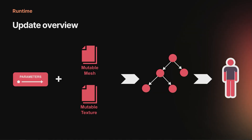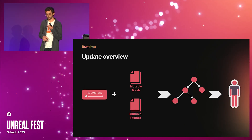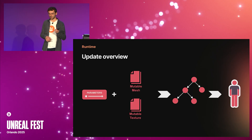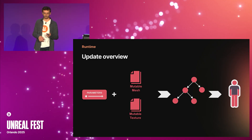Once a customizable object is compiled, Mutable can perform runtime updates on it. A runtime update takes the user parameters, compiles Mutable meshes and textures, and operates on them. Once the update finishes, Mutable returns normal skeletal meshes and textures which can be used on any normal actor. Keep in mind that meshes and textures are not always loaded — Mutable only streams them in when necessary for the update.